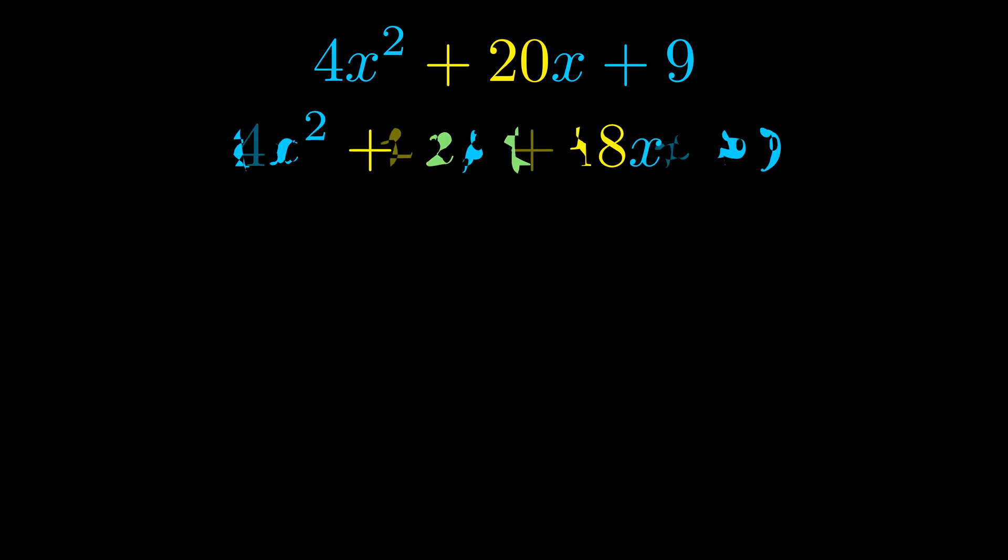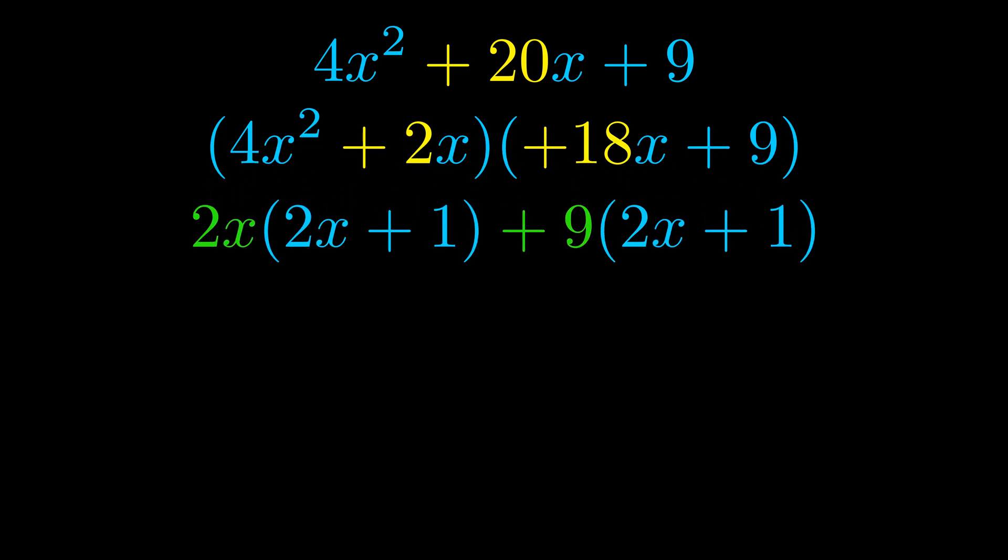Once we've done this we go ahead and we put parentheses around the first term and the last term. And we do that so that we can take the greatest common factor out of both terms. We can see the greatest common factor is now outside in green.